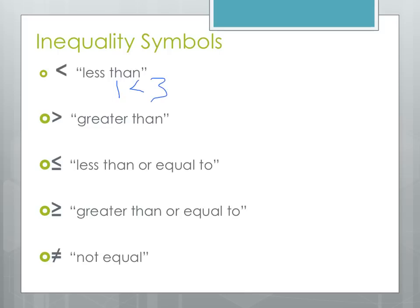The second symbol is greater than, a caret pointing to the right. We might use something like negative 1 is greater than negative 2, because negative 1 would be further to the right on our number line, and therefore it's greater than negative 2.